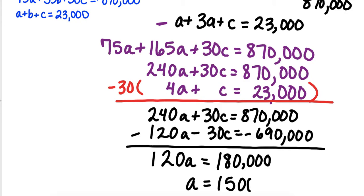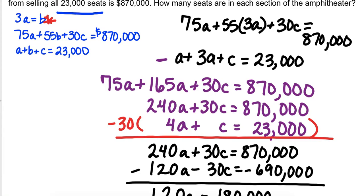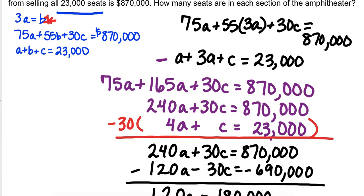So, in seat section A, there are 1,500 seats. Now, all I do is take my equation back here and I know the relationship. I know that 3 times A equals B. So, if A is 1,500, if I take 3 times 1,500, that will tell me what B equals. 3 times 1,500 equals 4,500 seats. So, there's B.